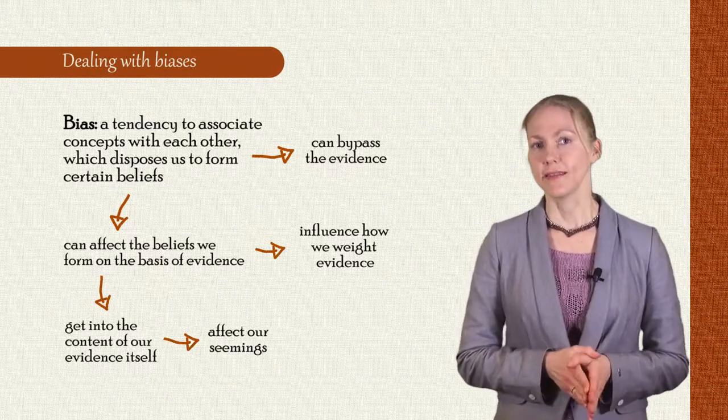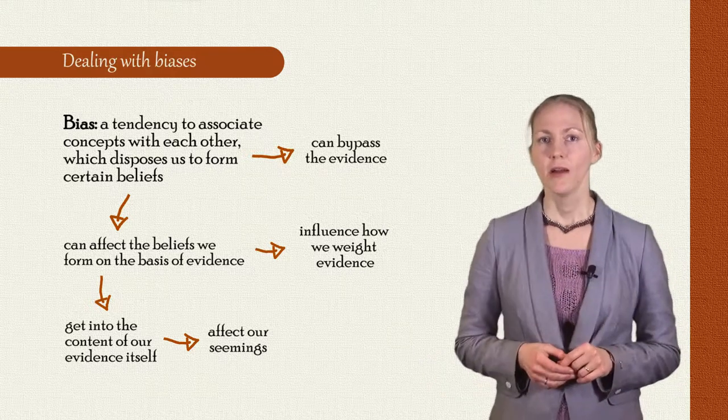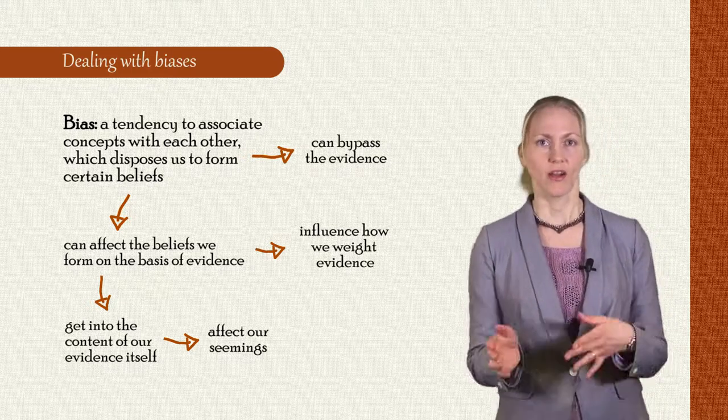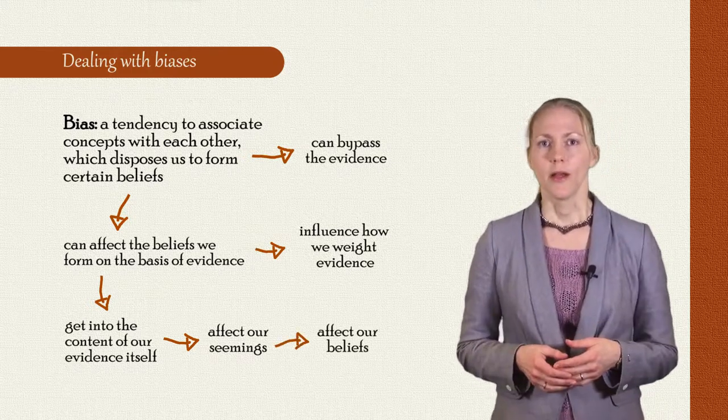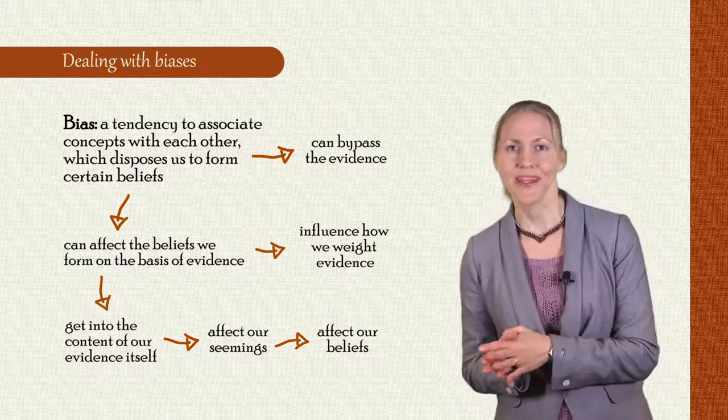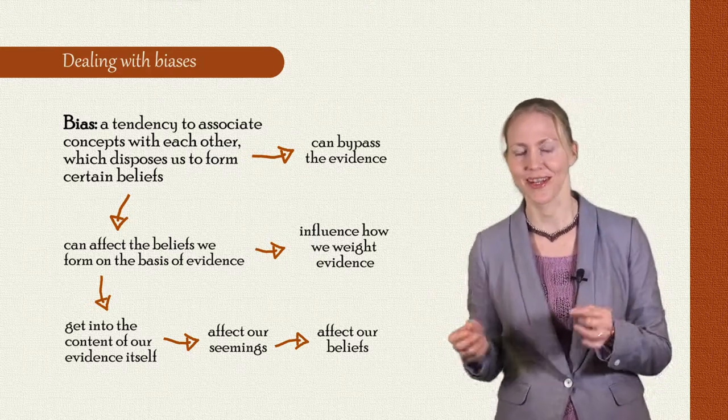From here we can easily see how bias might get into our belief evidence too. For when we have a seeming, we're naturally inclined to believe that things are as it represents them. So I'll be inclined to believe that a philosophy lecturer really is dishonest because I perceive her that way, and I have an association between dishonesty and philosophy lecturers.